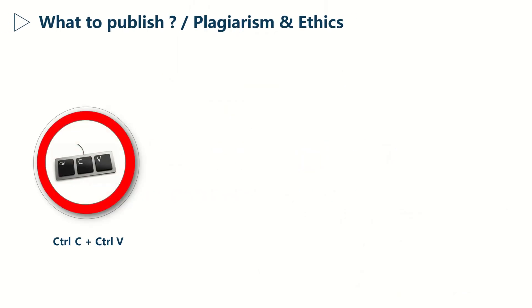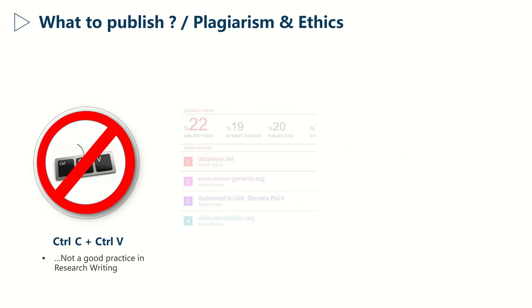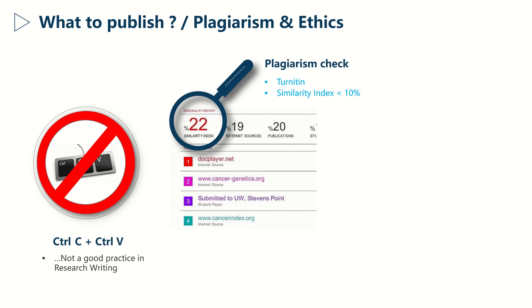Before talking about innovation, I'd like to say a word about plagiarism and ethics. We all know Ctrl+C, Ctrl+V — we use it on a daily basis. However, when it comes to research, this is not good practice. After submitting your manuscript to the journal, if the similarity index is superior or equal to 10%, your manuscript will immediately be rejected. There are software like Turnitin that can help you check the amount of plagiarism in your manuscript.